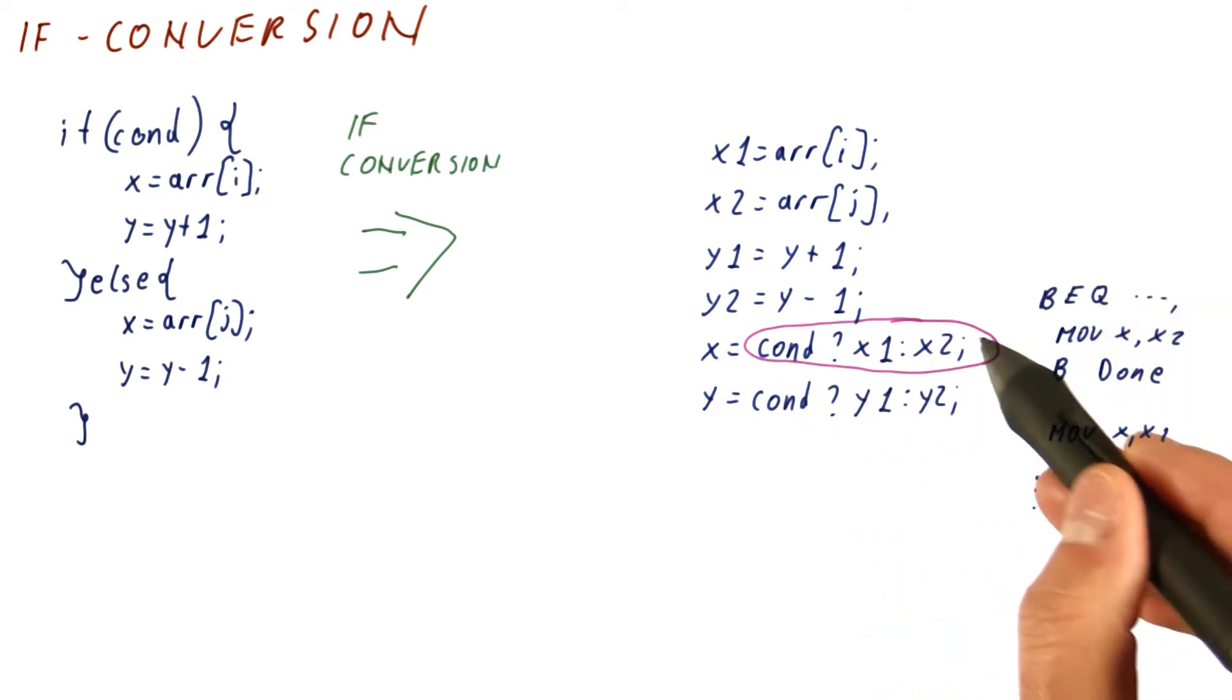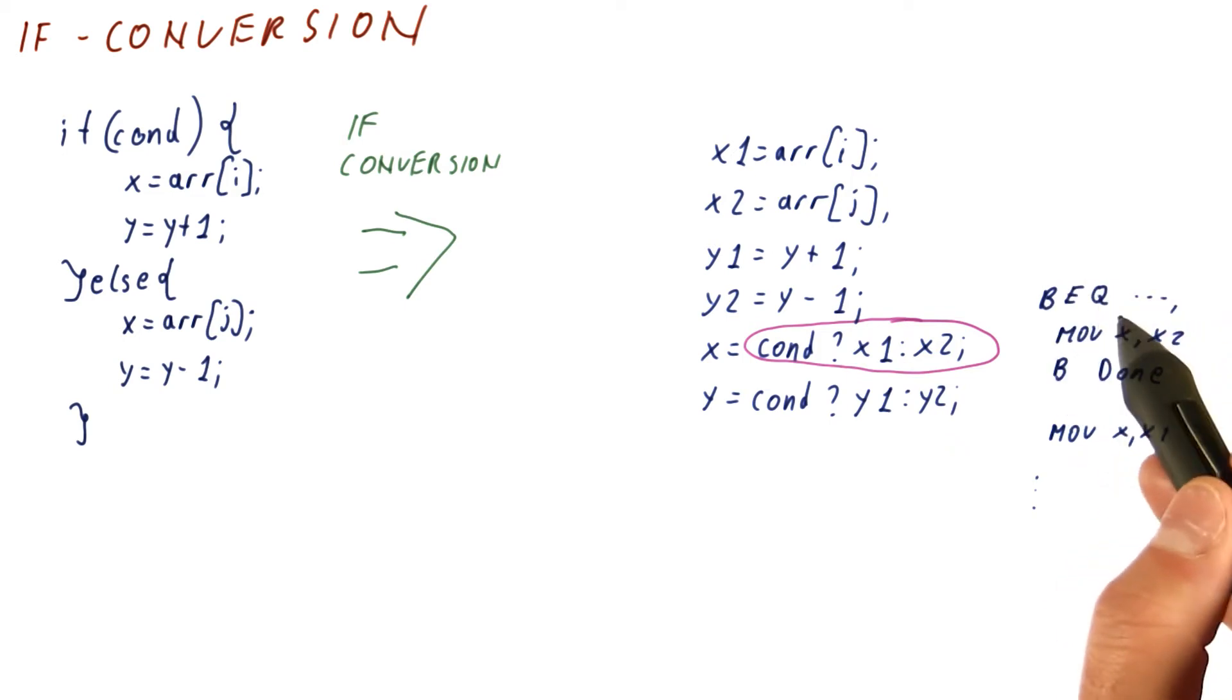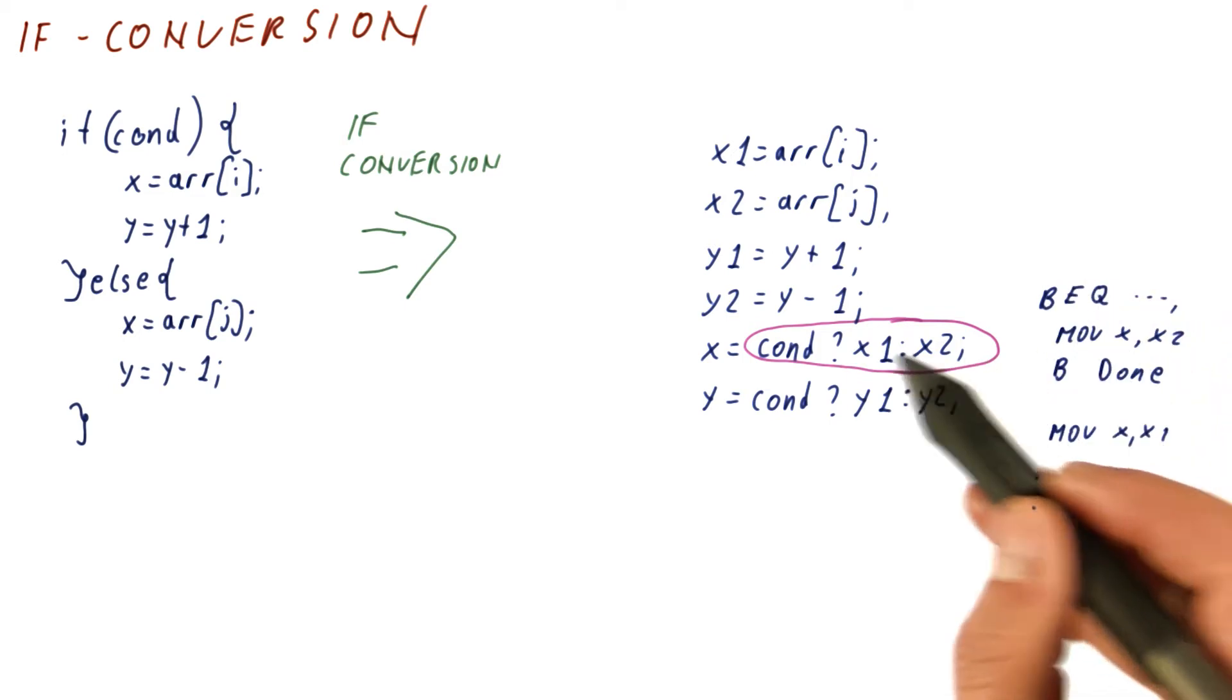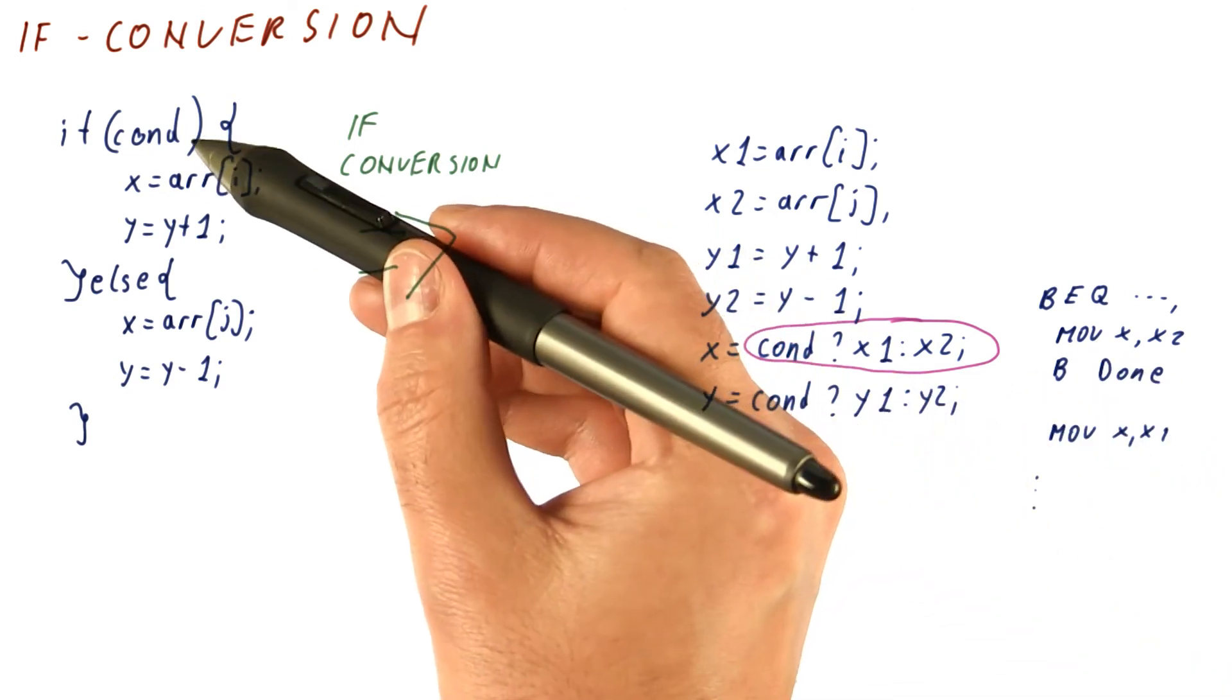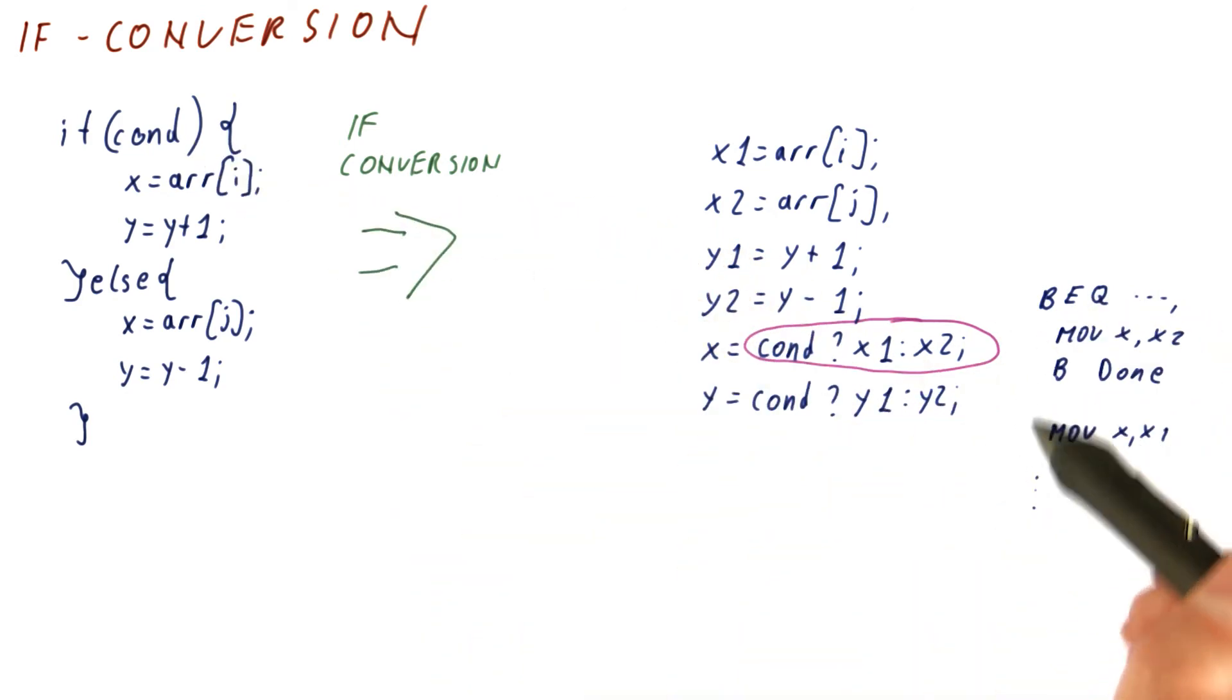If we convert this into some sort of a conditional expression that still branches based on the condition and then does the move of x2 into x, otherwise does the move of x into x1, then we really haven't done much. Because we converted one branch into another branch, and now we have this branch twice.